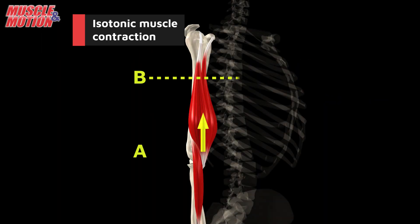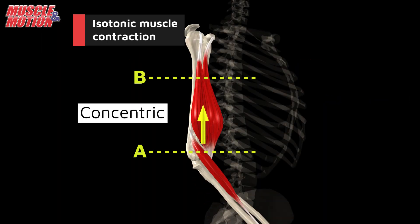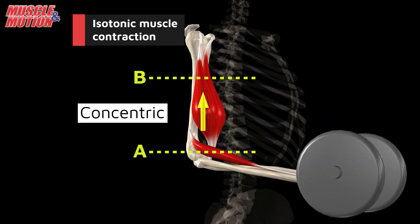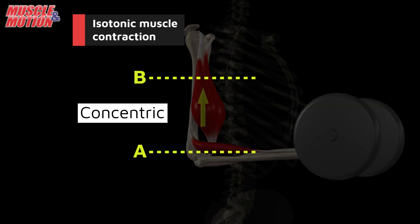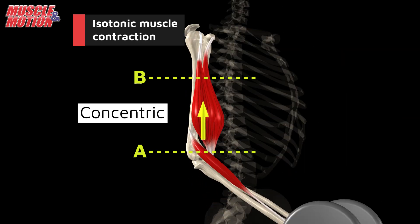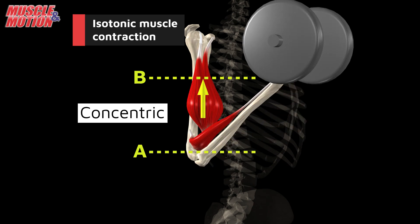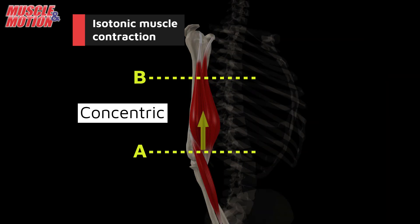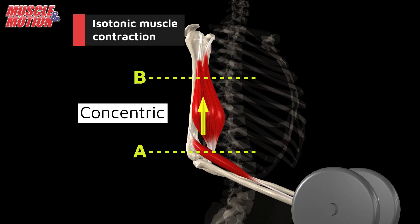Concentric contraction is characterized by muscle shortening under load. For example, when you perform a bicep curl during the flexion phase, your biceps contract and shorten under the load.